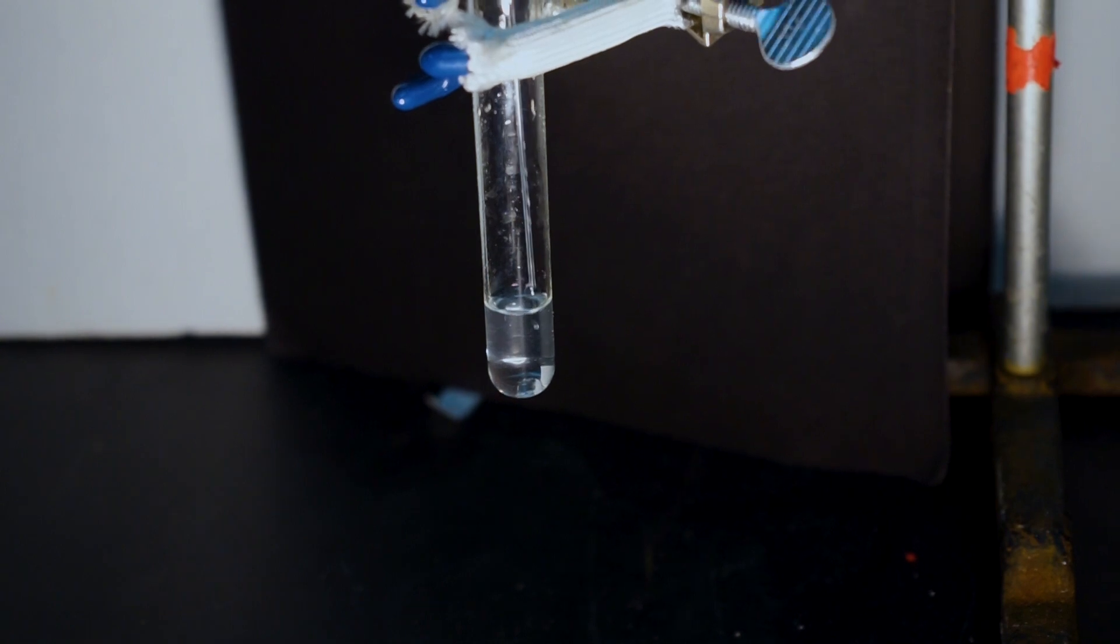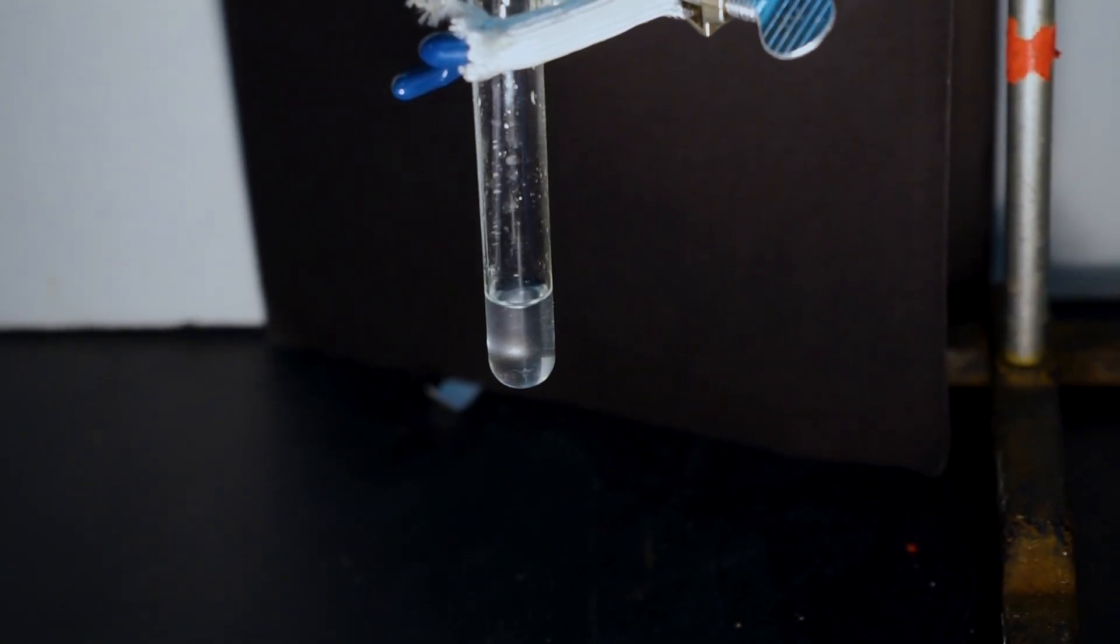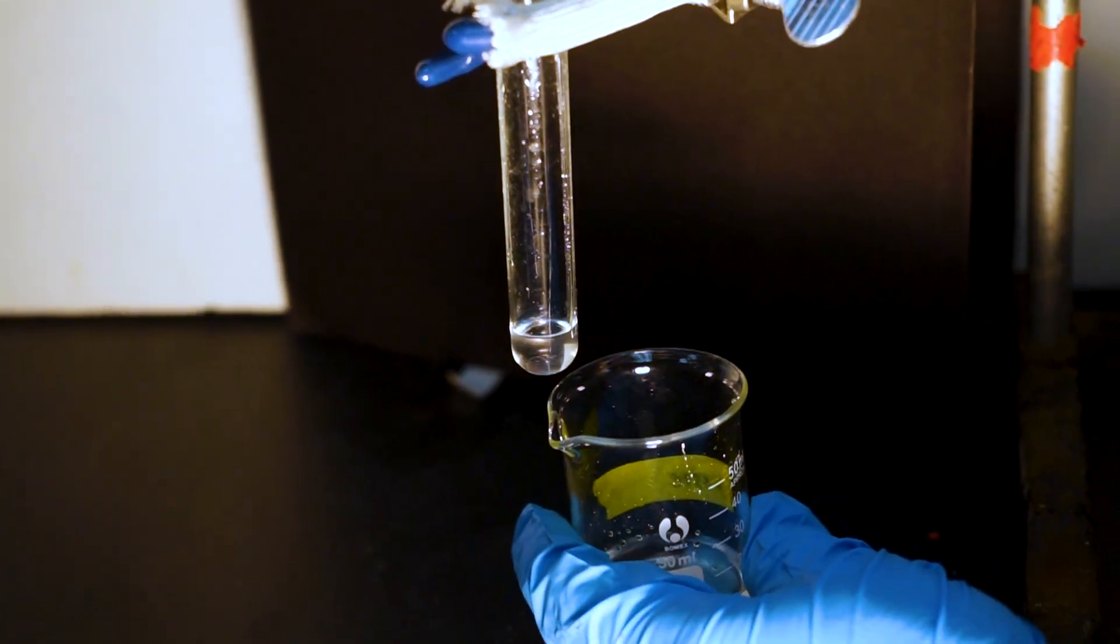The final wash is with two milliliters of saturated sodium chloride. Once again, stir and let the layers separate as needed. Discard the top layer.